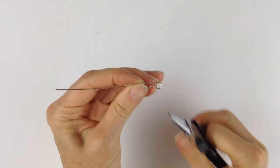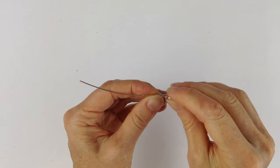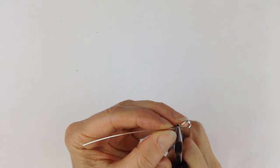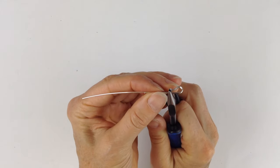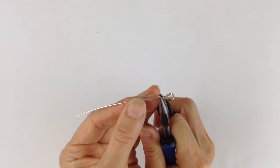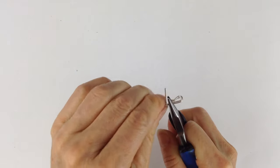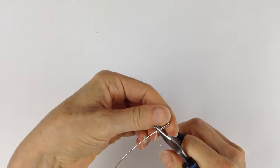You want the loop to be a generous size like that. And then what we want to do is wind the short end around, so hold it a little bit below the end of the hook and just loop around like that.